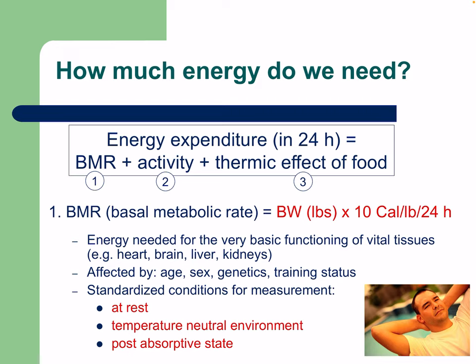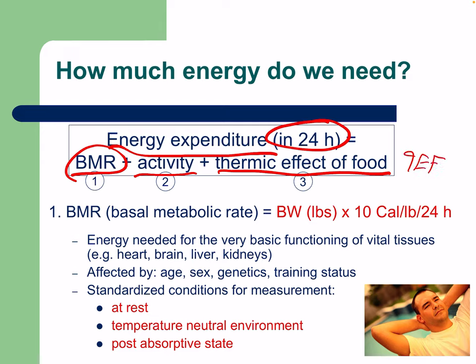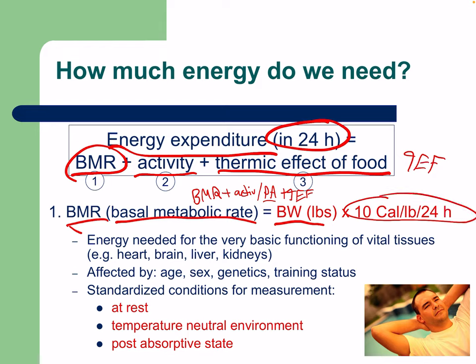How much energy do we actually need in 24 hours? Total daily energy expenditure equals basal metabolic rate (BMR) plus activity plus the thermic effect of food (TEF). BMR is calculated as body weight in pounds times 10 calories per pound per 24 hours. This isn't 100% accurate because muscle mass varies — people with more muscle mass have a higher BMR, and more trained individuals are more efficient at using energy.